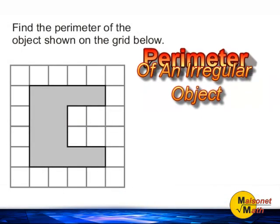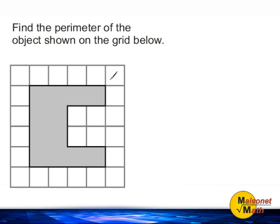To find the perimeter of this object, what we are going to do is pick any starting point on the outside of this shape. I'm going to start with this point right here. And I am going to jump from one grid mark to another grid mark. And that would be a distance of one unit.